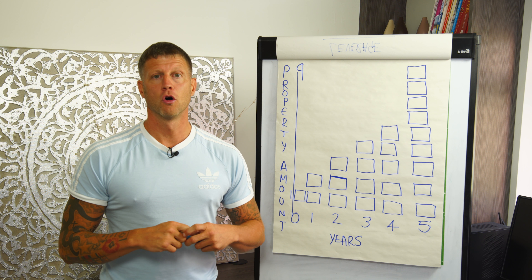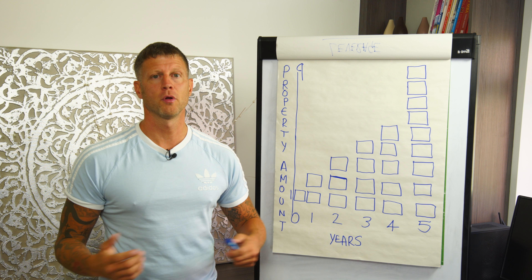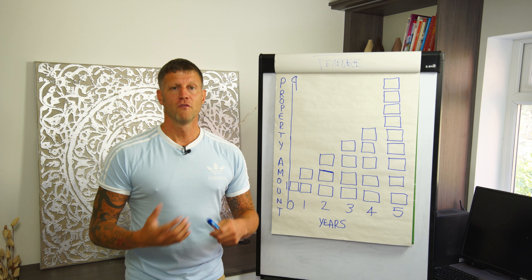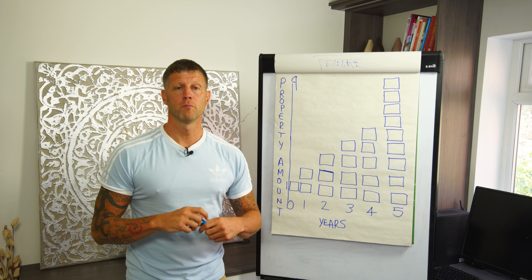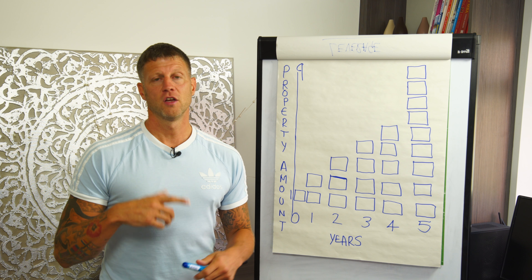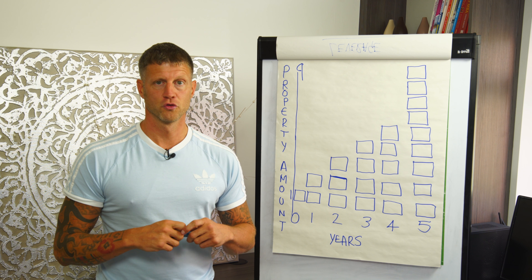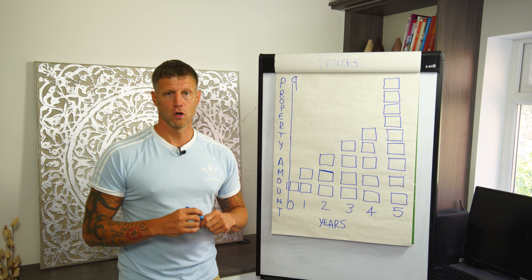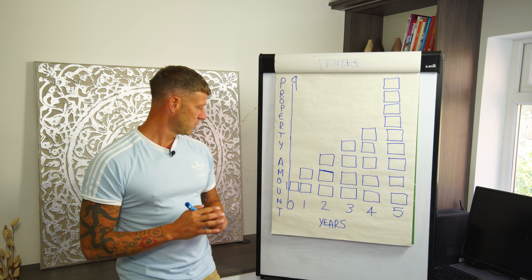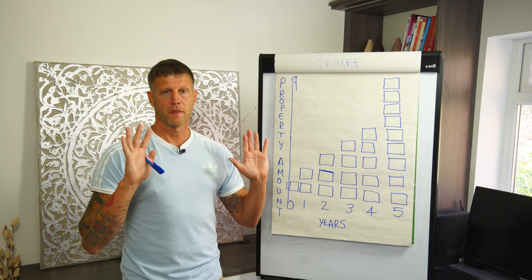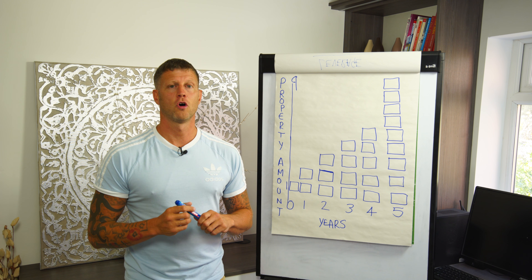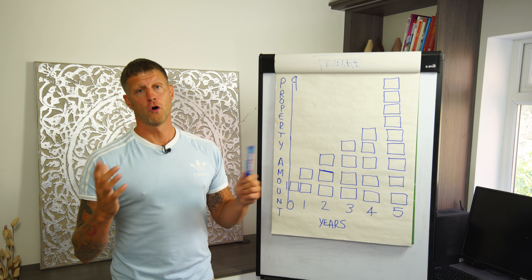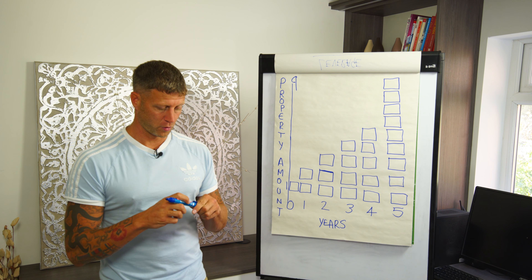There'll also be another model on compound effect. It's a simple example of you just putting in £1,000 and seeing how quickly that grows over 20 years through compound effect. Looking at this model now, I want you to imagine that you've got £20,000 for a deposit to get started with property.